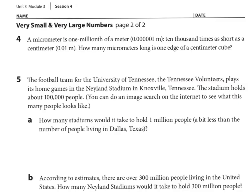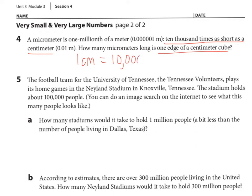Looking at number 4: a micrometer is one millionth of a meter — ten thousand times as short as a centimeter. How many micrometers long is one edge of a centimeter cube? The answer is actually found right in the question: it says ten thousand times as short as a centimeter. So one centimeter equals ten thousand micrometers.